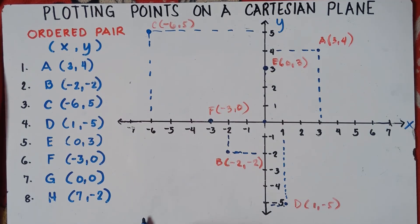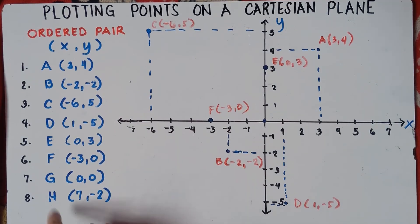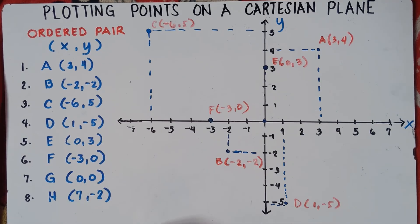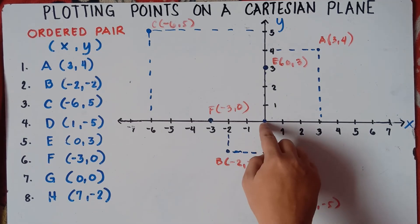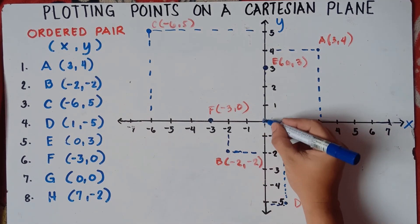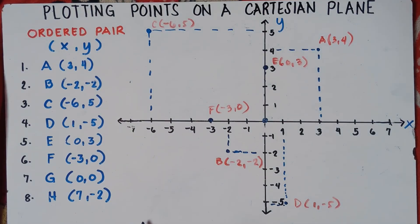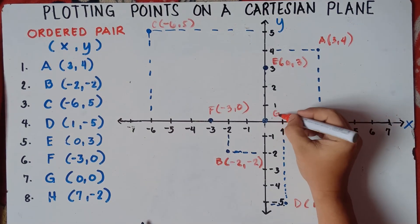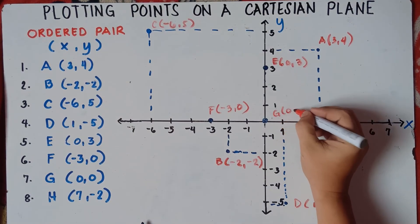For point G, x is 0 and y is 0 — therefore this is the origin. We label this one in the center part: G is (0, 0).